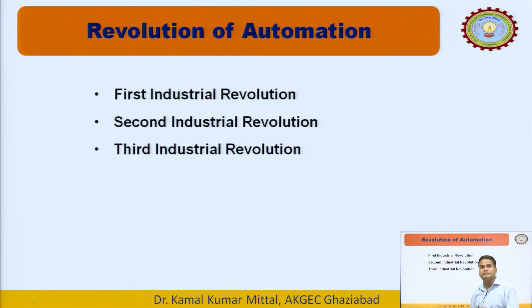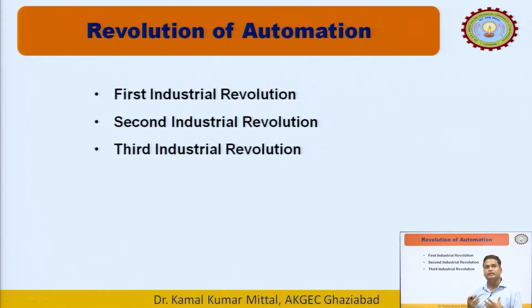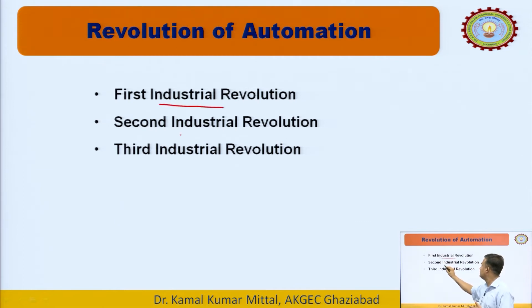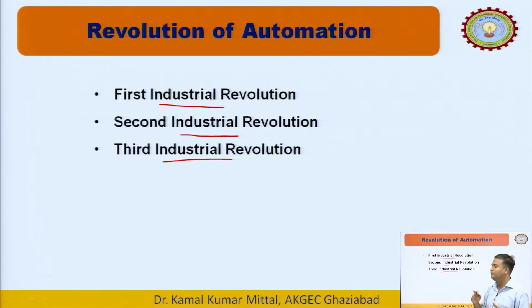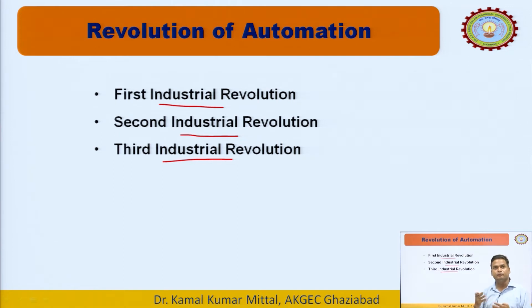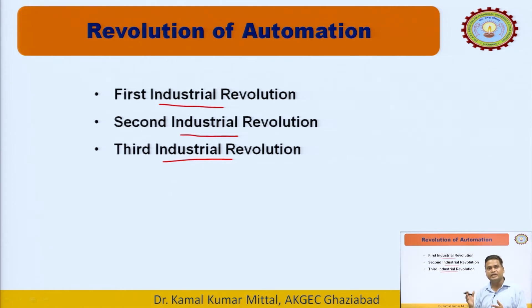Then comes the revolution of automation. Revolution means progress or improvement in automation. There are three types of industrial revolutions: first, second, and third. Revolution means improvement in automation. It can be at component level, sensor level, or machine level. Before the 70s, we were using big machines and big computer systems that consumed a lot of power and energy.